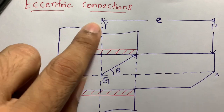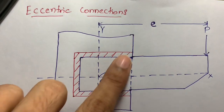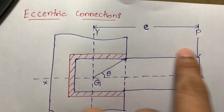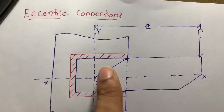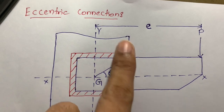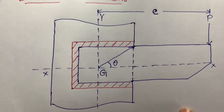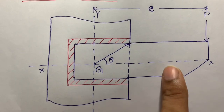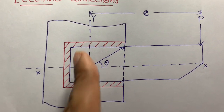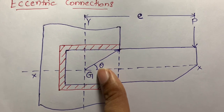This eccentric load is the distance from the center of gravity to the load point. Suppose this is a steel column, and this is a bracket plate or gusset plate. Practically, this red portion is the welding portion. We use these eccentric connections for extra supports. This is the side view of the column and the bracket plate connected using welding.